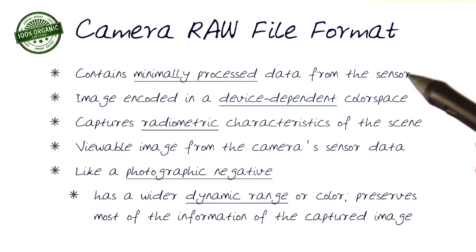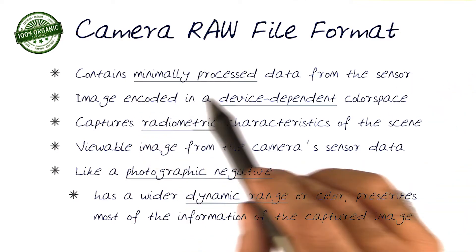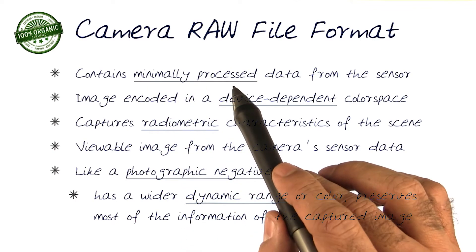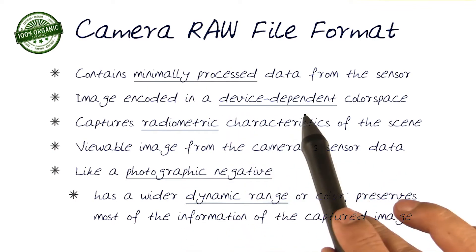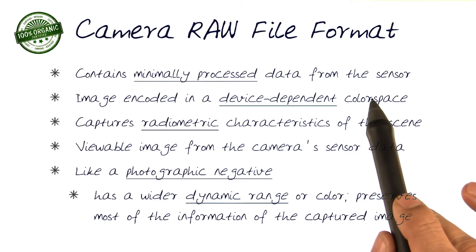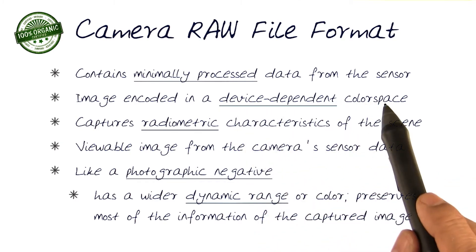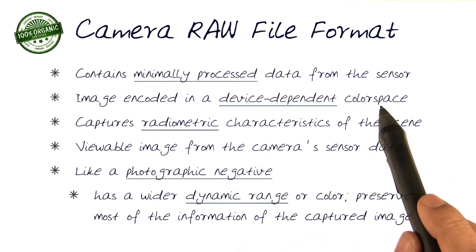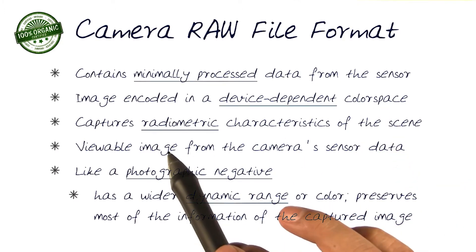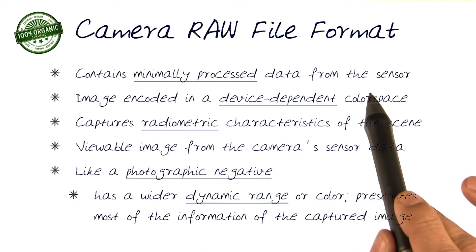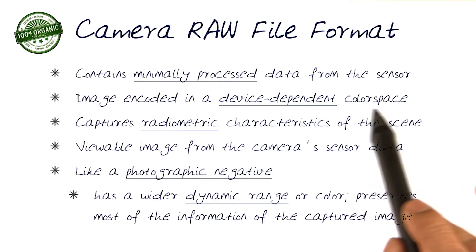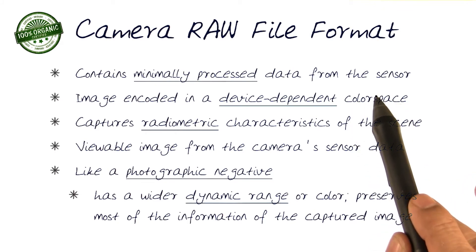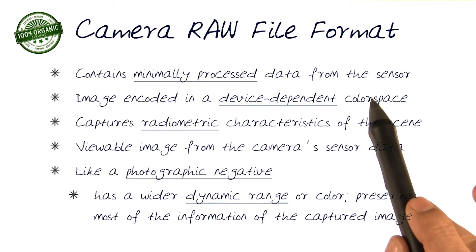So in essence, one of the advantages of a camera raw file format is that they're minimally processed and device dependent — therefore you know more about how the perfect response for that specific camera's device is. It's device dependent, so the color space is really known by the manufacturers, and therefore they allow you to read out the best values from it.